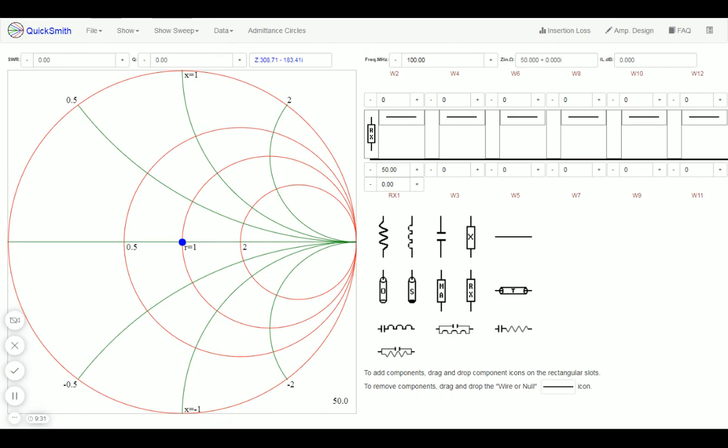Even today, Smith chart is the preferred method of displaying how RF parameters behave at one or more frequencies. Most RF network analyzers include a Smith chart option for display of results.